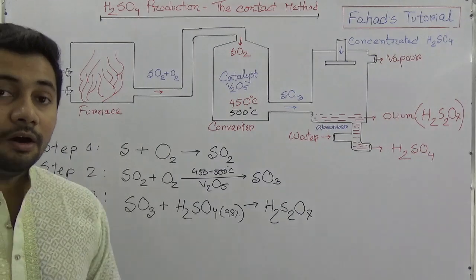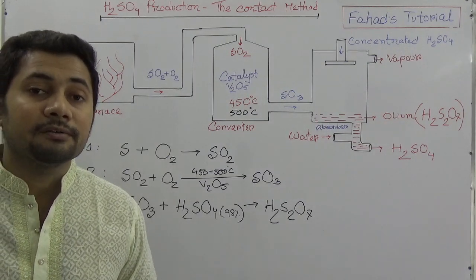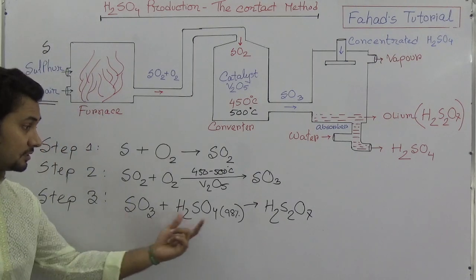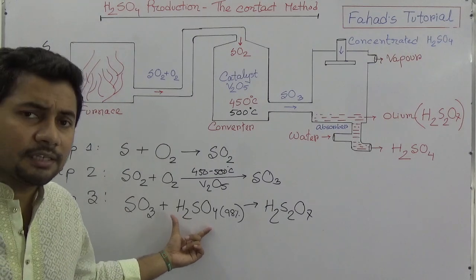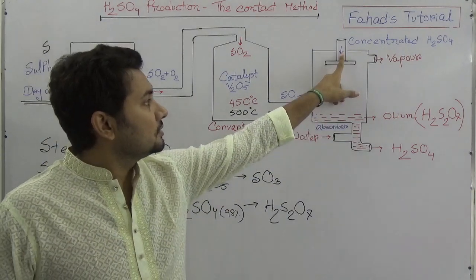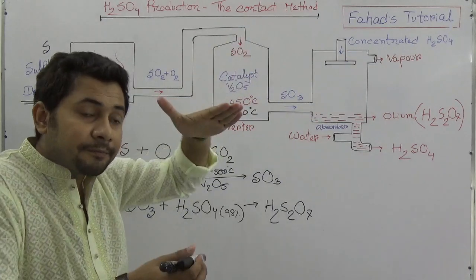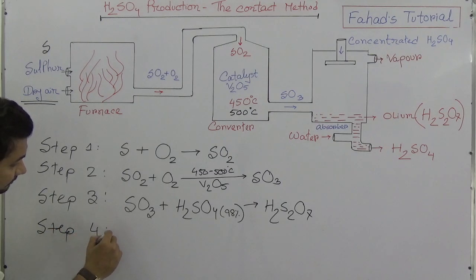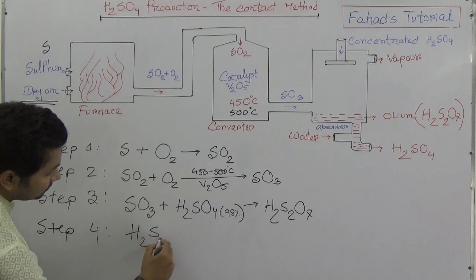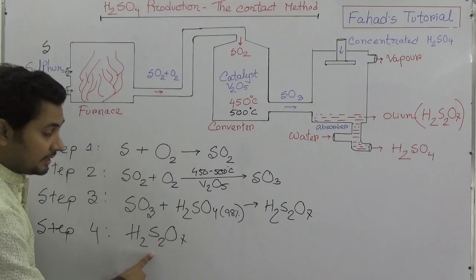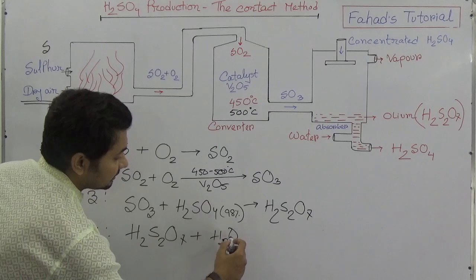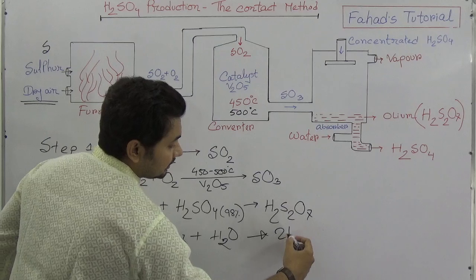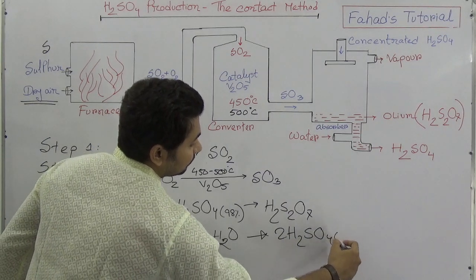This produces H2S2O7, known as oleum or pyrosulfuric acid. So sulfur trioxide is first added with concentrated sulfuric acid in the absorber chamber. Then in Step 4, this pyrosulfuric acid (H2S2O7) is added with water to produce liquid H2SO4.